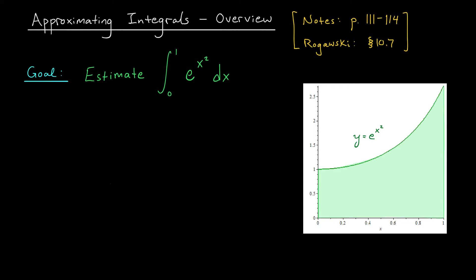To start things off, consider the following very famous example, the function e to the x squared. Now suppose we want to know the integral of this function from x equals zero to x equals one. You could try to compute this by finding an antiderivative of e to the x squared, but you're going to have a hard time. e to the x squared doesn't have a nice elementary antiderivative, so we can't compute this integral using the fundamental theorem of calculus.